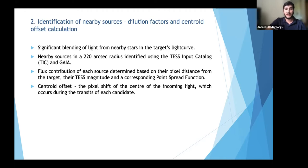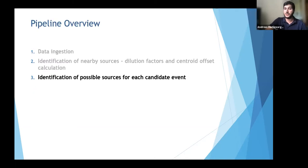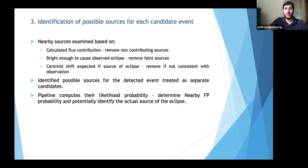We also calculate the centroid offset — the pixel shift of the center of incoming light during transits — which indicates whether an event originates on the target or on a nearby or background star. The third step examines nearby sources based on three criteria: calculated flux contribution, whether the source is bright enough to cause the observed eclipse, and whether the expected centroid shift is consistent with our observations. Identified possible sources are treated as separate candidates with their own likelihood probabilities, allowing determination of the nearby false positive probability and potentially identifying the actual source of the eclipse.